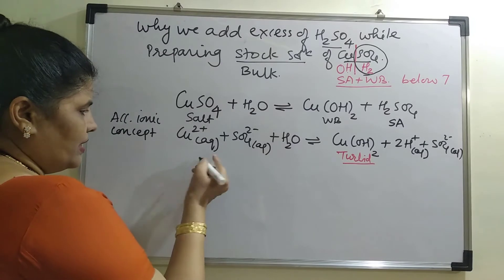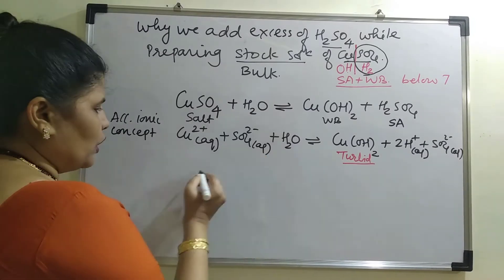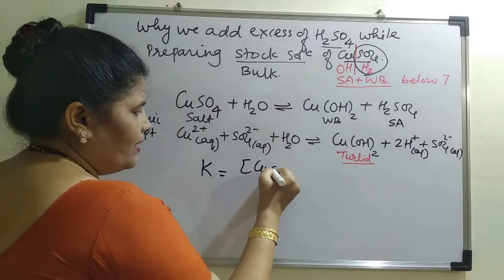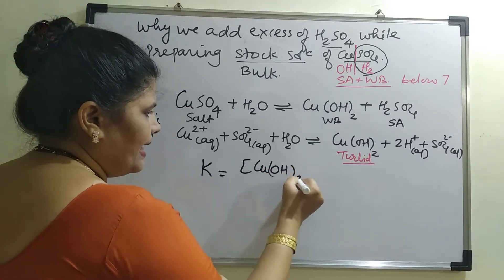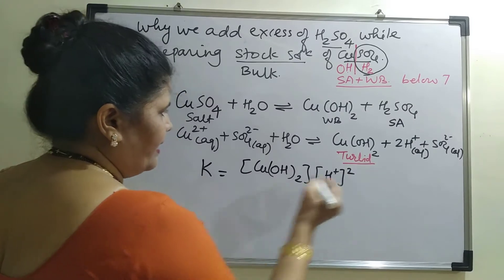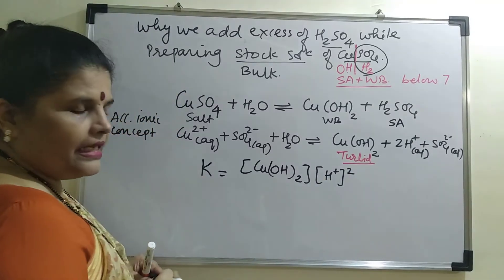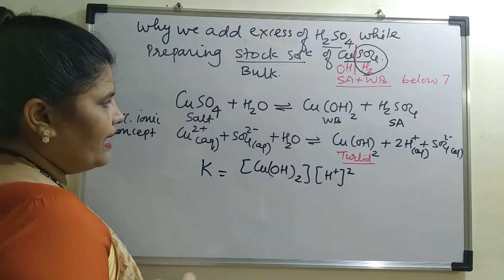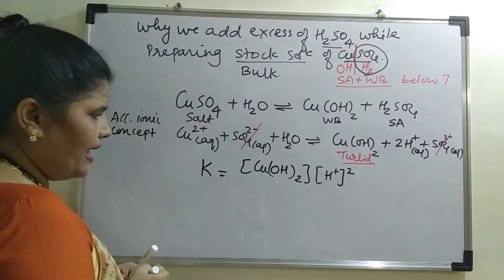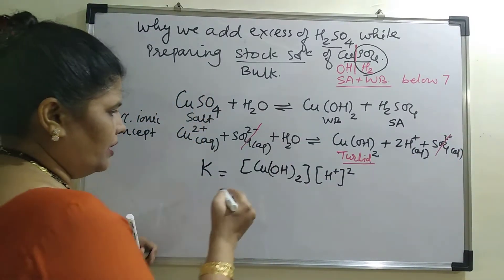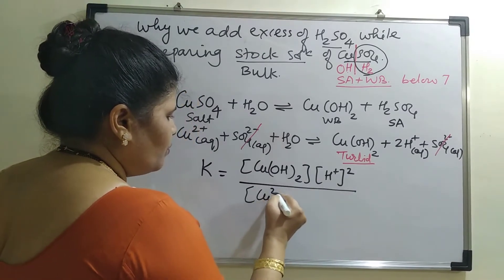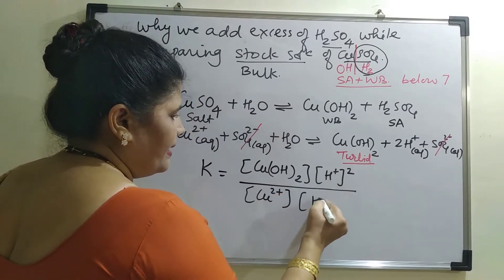For that, let us look at the equilibrium constant for this reaction. Applying the law of mass action and cancelling the common ions, what we get in the equilibrium expression involves H⁺ ions squared, Cu²⁺, and H₂O.